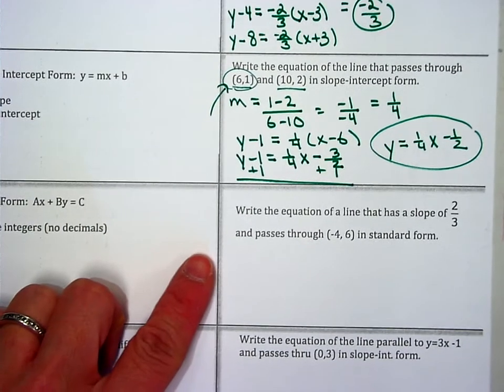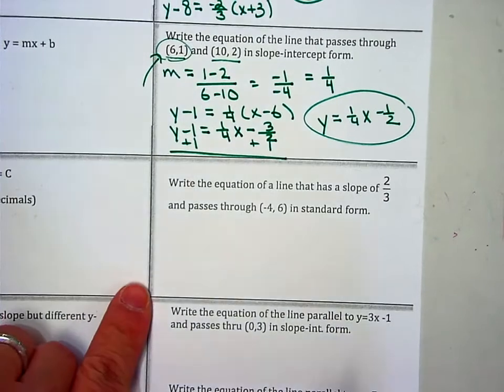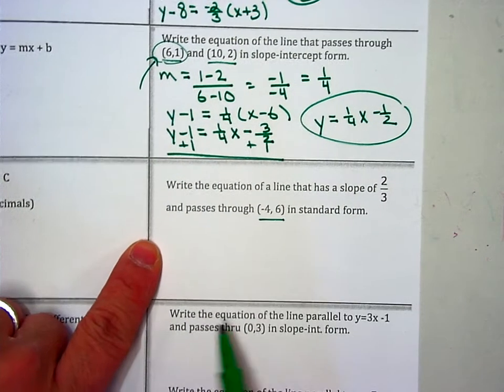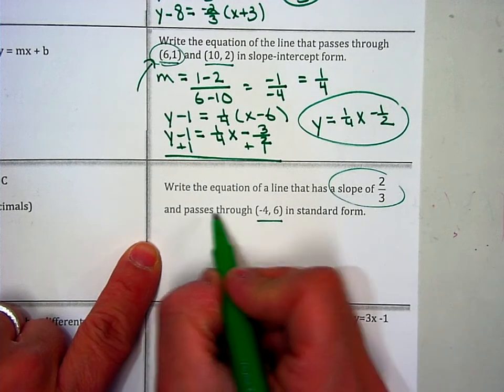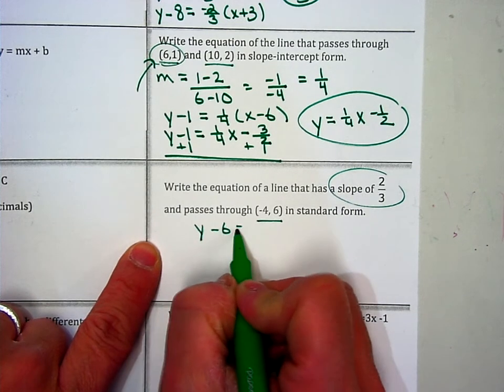Okay, next. The last one we did was standard form. It says write the equation of a line that has this slope and goes through this point. So I'm going to start with point slope first, but I am giving you the slope this time, so I'm going to go ahead and go straight to point slope.